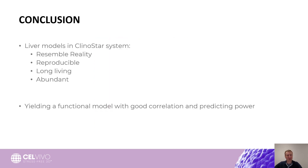To conclude, our Cell Vivo Clinostar-based liver model is capable of correctly mimicking the in vivo situation. It creates reproducible results and has long-term living capacity — we have been growing liver spheroids for almost a year while preserving hepatocyte functionality. The model is also easy to use and produces abundant biomass sample. All this leads to a functional model with good correlation to the in vivo situation and very good predictive power.